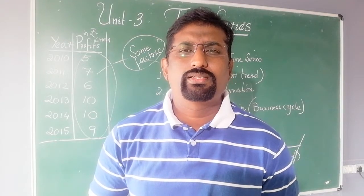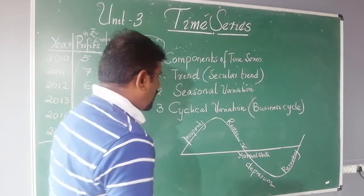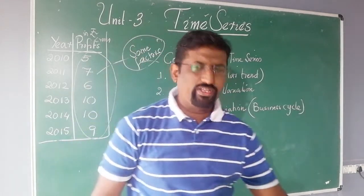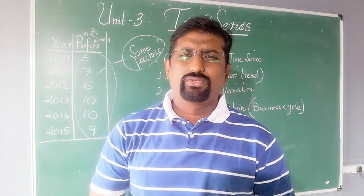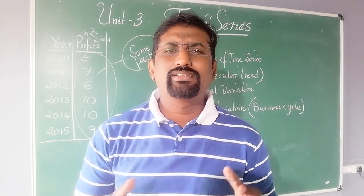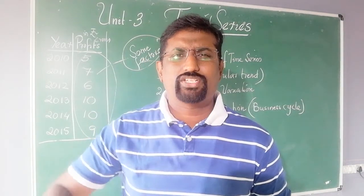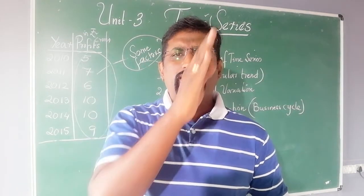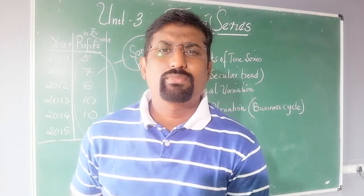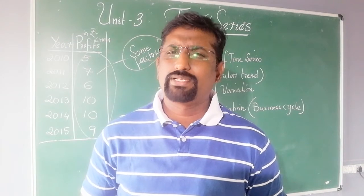Now let's study the third component called the business cycle or cyclical variation. Any business will definitely have highs and lows — it forms a wave-like structure, going high and then coming down. Prosperity will be there, and at the same time a business can also go into depression. This oscillatory variation is often seen in many businesses.